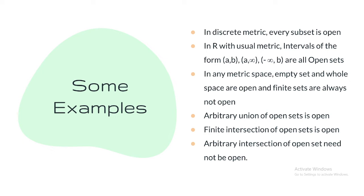Combining these characterizations: the empty set and the whole set are always open; arbitrary union of open sets is open; and finite intersection of open sets is open. Combining these three properties, we get a collection called a topology. Topology is a wide branch of real analysis and is useful for researchers.